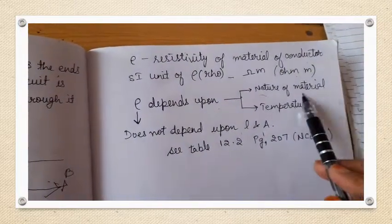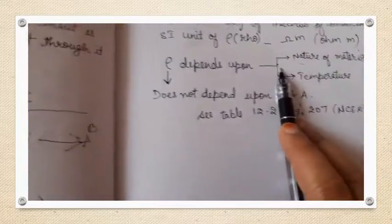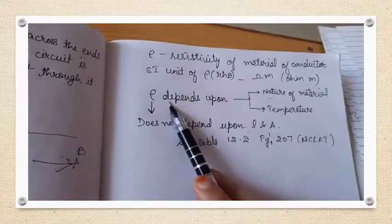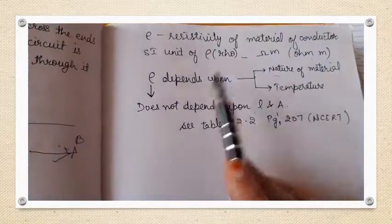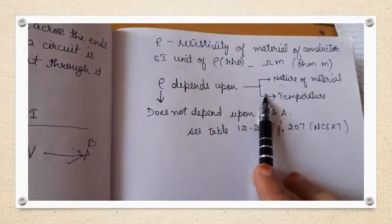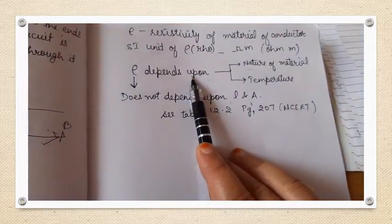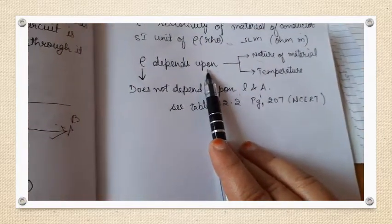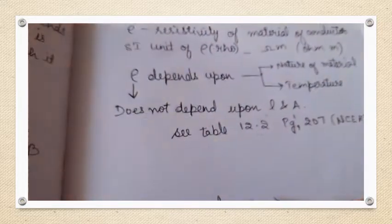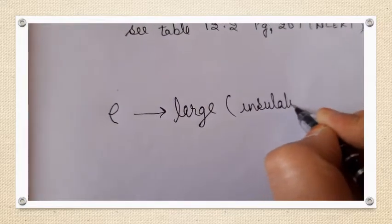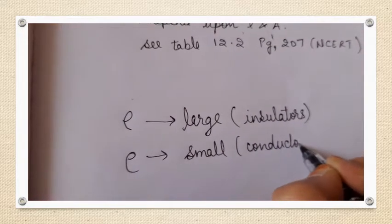You can see table 12.2 on page 207 of NCERT. For metals, the resistivity ρ is very low, and such materials with very small resistivity are known as good conductors of electricity — they let electric current flow through them very easily. Materials for which ρ is very large are known as insulators, and current does not flow through them easily.